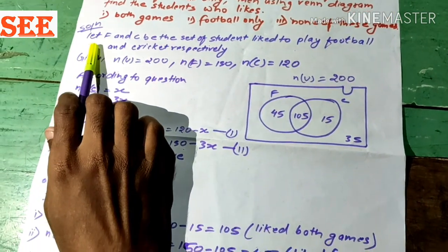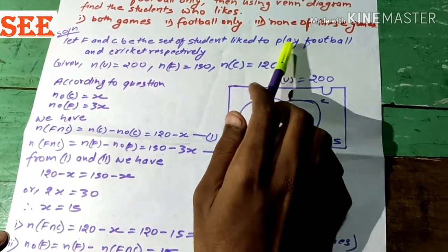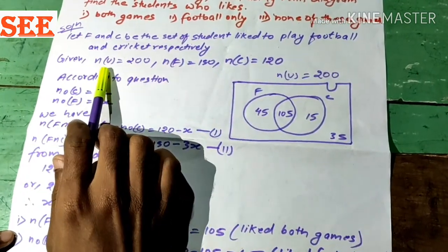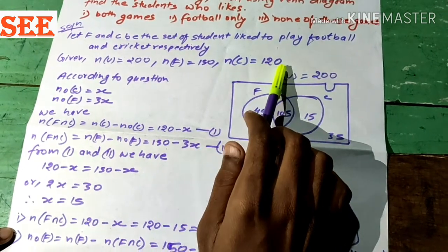Now, solution here. Let F and C be the set of students like to play football and cricket respectively. Given here, n(U) = 200, n(F) = 150, n(C) = 120.